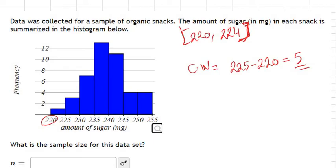The second thing we can find is the size of the sample. The size of the sample is basically how many data values are there in that sample. So if you find the frequency of each of these bars and add them together, this is how you're going to end up finding the sample size n.